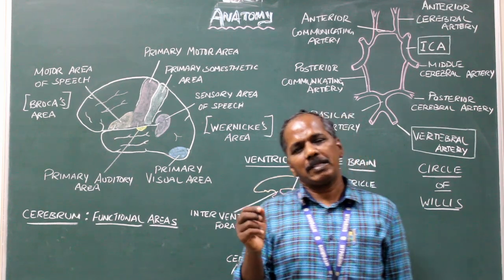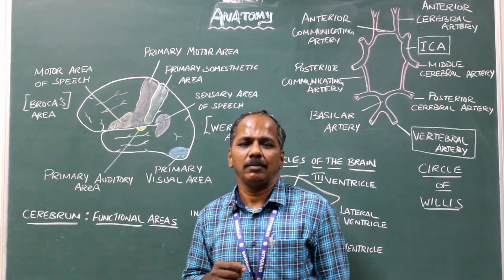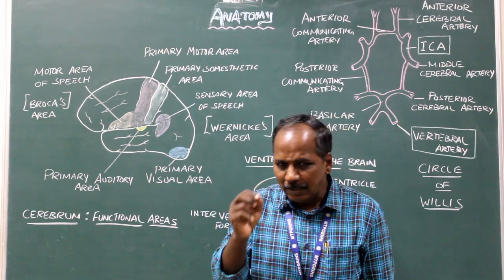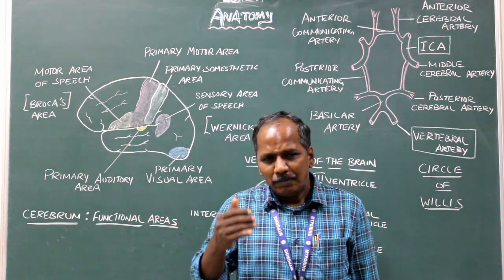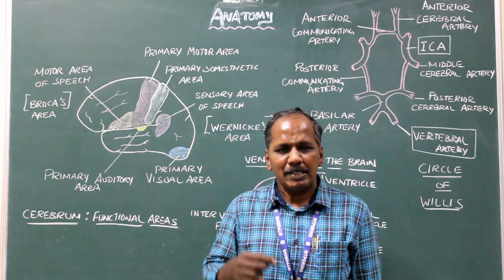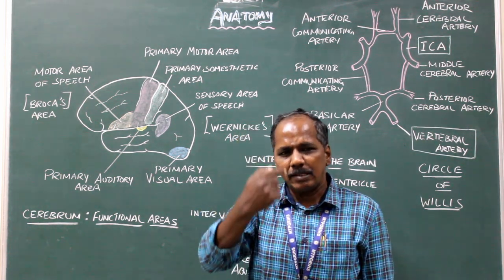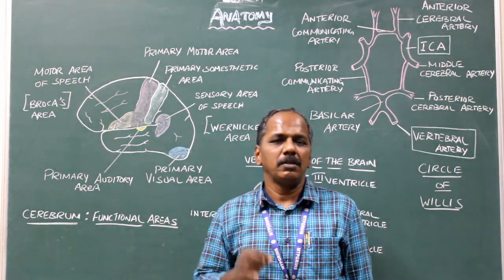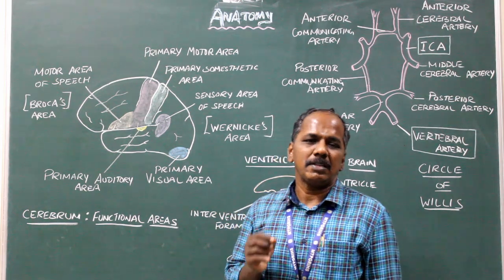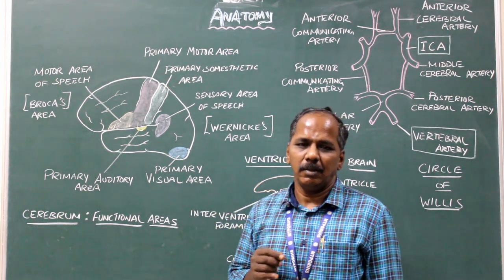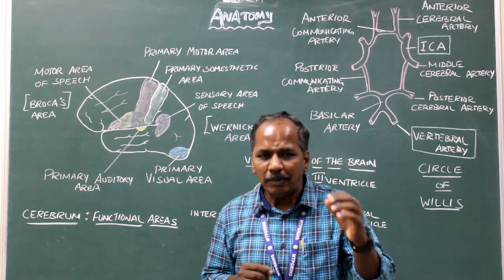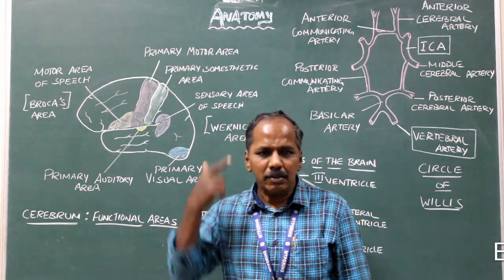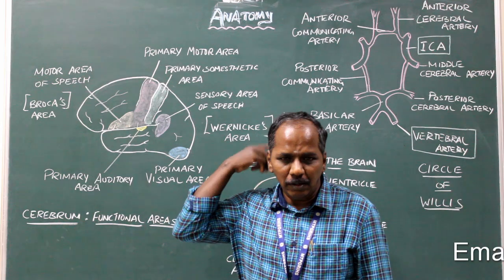Central Nervous System. The nervous tissue present in the central axis of the body constitutes the central nervous system. For example, the brain and spinal cord.